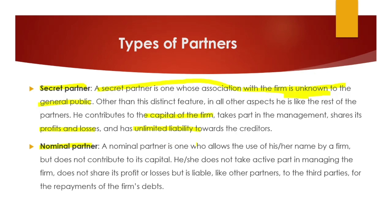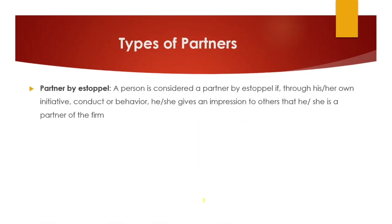Next is the nominal partner. A nominal partner allows his or her name to be used by the firm but does not contribute capital. They do not take any active part and do not share any profit and loss. However, they are liable to third parties for the repayment of the firm's debts. So a nominal partner: no capital contribution, no profit/loss share, no active part — only their name is used — but they do have liability to third parties.